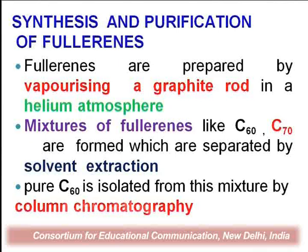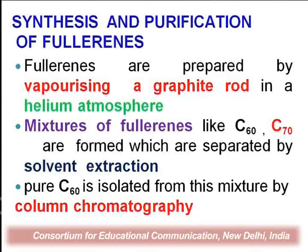Fullerenes are prepared by the vaporization of the graphite rod — we use the graphite rod to produce the fullerene molecules. Fullerene molecules form in a helium atmosphere, provided to the chamber containing the graphite rods. When we obtain the fullerene molecules, they are a mixture of different fullerene elements, separated by solvent extraction. The pure C60 is isolated from the mixture by column chromatography, which allows us to extract pure C60 from the other soot particles.